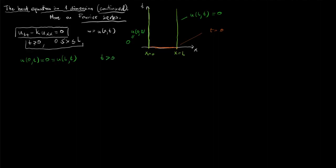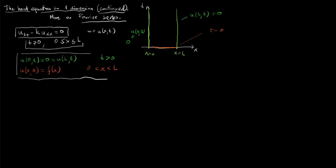We also wanted this function to satisfy an initial condition at t equals zero: for every x, this function is equal to a given function f(x) for every x between zero and L. So here was our problem — to solve the heat equation with these boundary conditions.